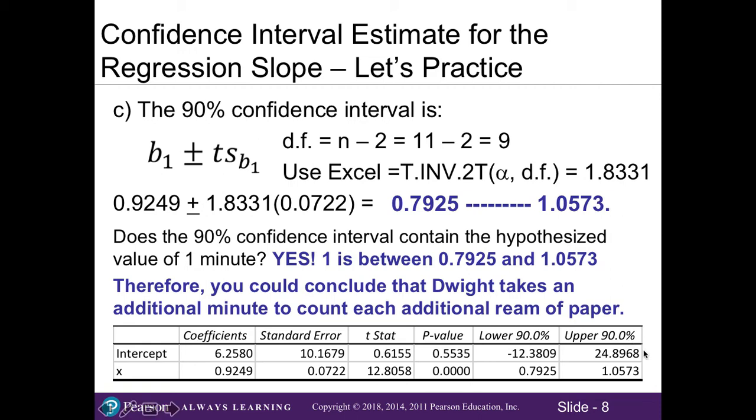You might have noticed that in our regression analysis in the output, our lower and upper confidence limits are actually given to us here in the table because we had set it at 90%. So we have our data right here. So this is where it's important that we understand where the numbers come from and how they're calculated, but also note that we can read the table to get us this information as well.